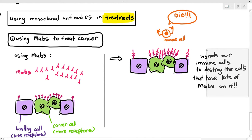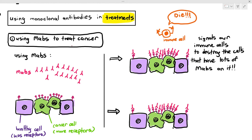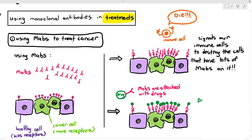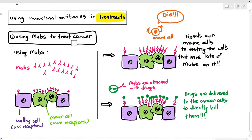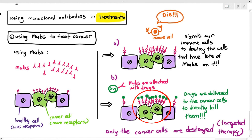Another way to treat cancer using monoclonal antibodies is to attach anti-cancer drugs to the MABs instead of radioactive material. When the monoclonal antibodies attach to the receptors on cancer cells, the drugs are directly delivered into the cancer cells to destroy them. The concentration of drugs delivered to normal cells is insufficient to kill them, so only cancer cells are destroyed. This is called targeted therapy — only cancer cells are destroyed and healthy cells are left undamaged.